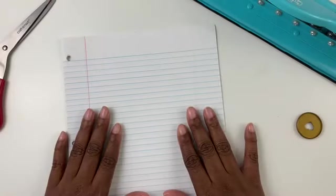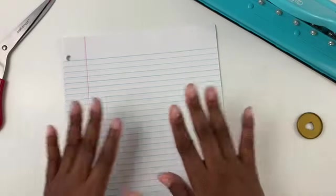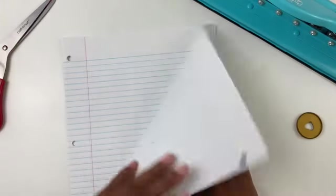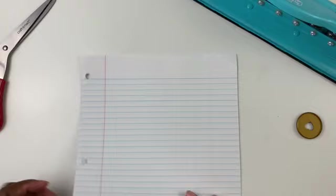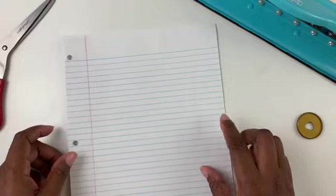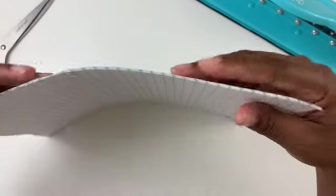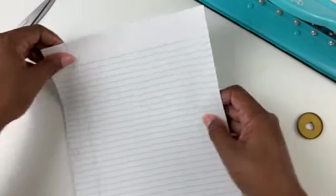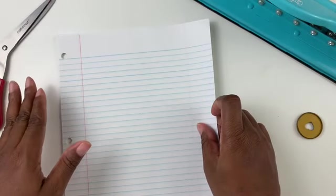So, as you guys can see, I have some plain writing paper, some plain loose writing paper. This happens to be college rule paper. As you can see, the lines are very, very close together. Now, with this one, you can use college, you can use wide rule. It's all up to you. I like writing with college rule paper. My kids write with wide rule.